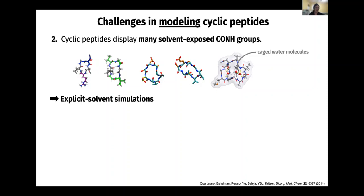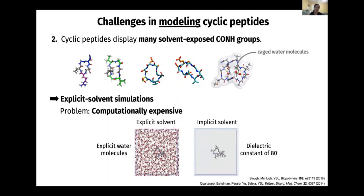This means that to accurately describe the energetics of different conformations, I need to use explicit solvent simulation. For a computational chemist, if you don't include water, the simulation will only have the peptide — about 110 atoms — with implicit solvent, meaning water is just treated as a dielectric that weakens your Coulomb interaction by scaling it down by a factor of 80. This is a very cheap simulation because the total number of atoms is still 110.